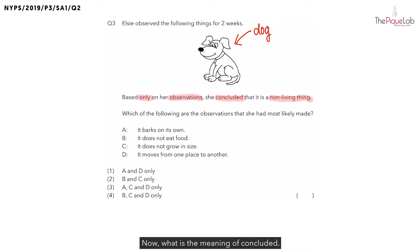Now, what is the meaning of concluded? Concluded means we confirm that this dog is a non-living thing. But what must Elsie have observed such that she can confirm that this is a non-living thing? Let's take a look at her observations below.